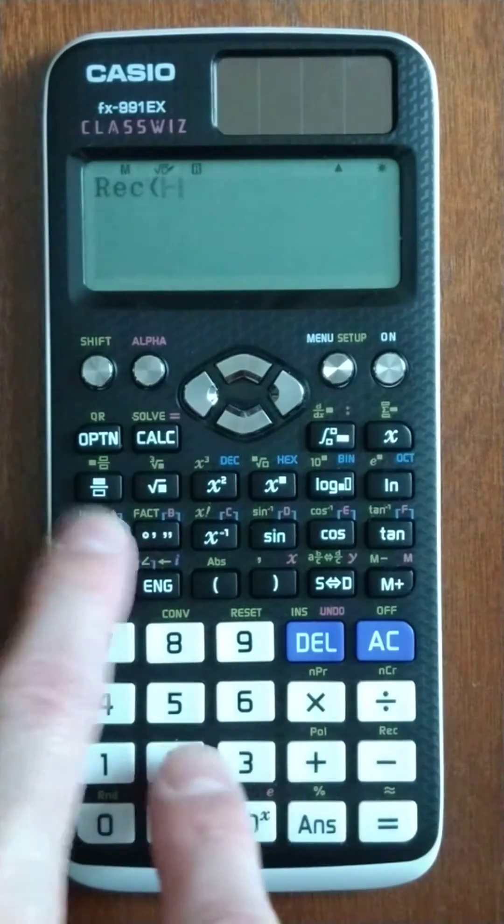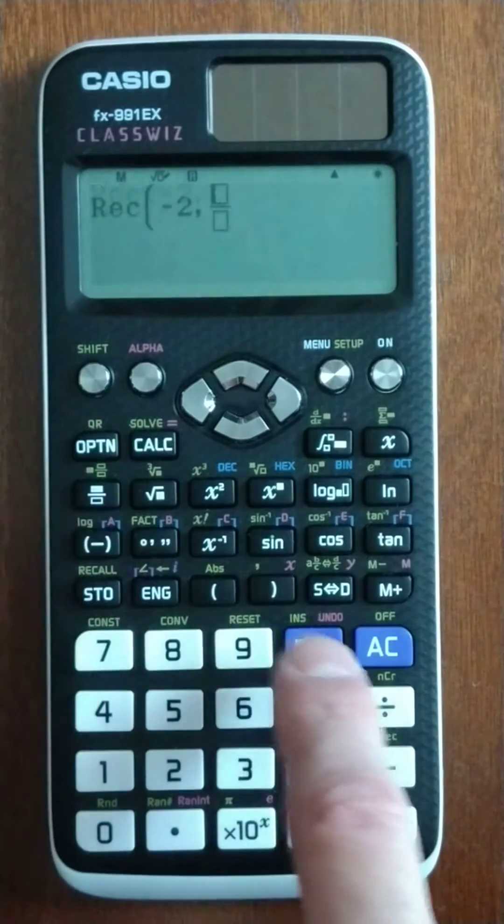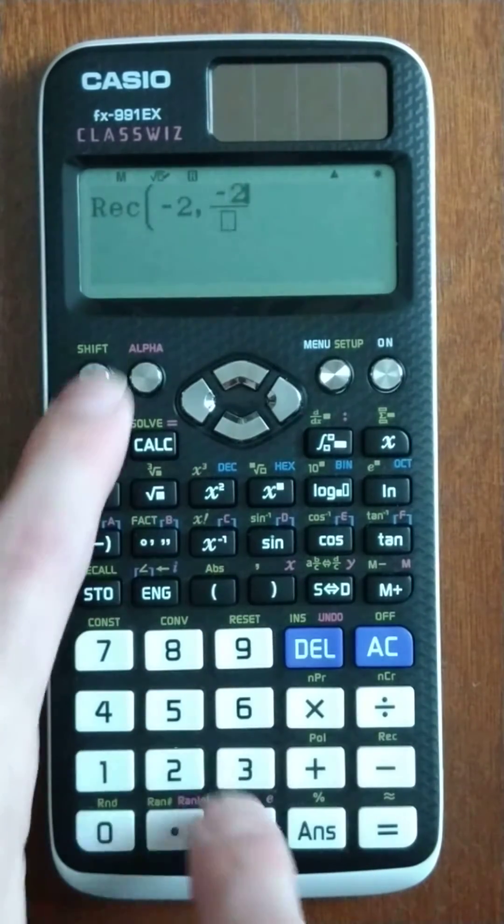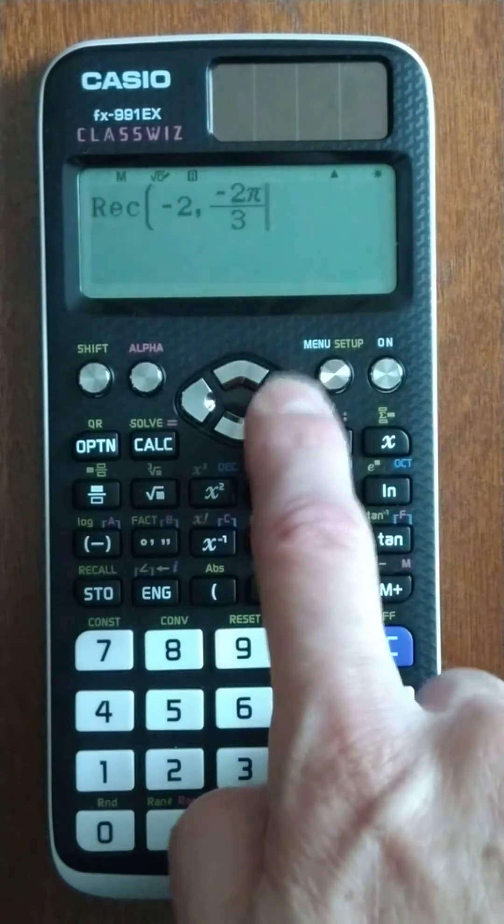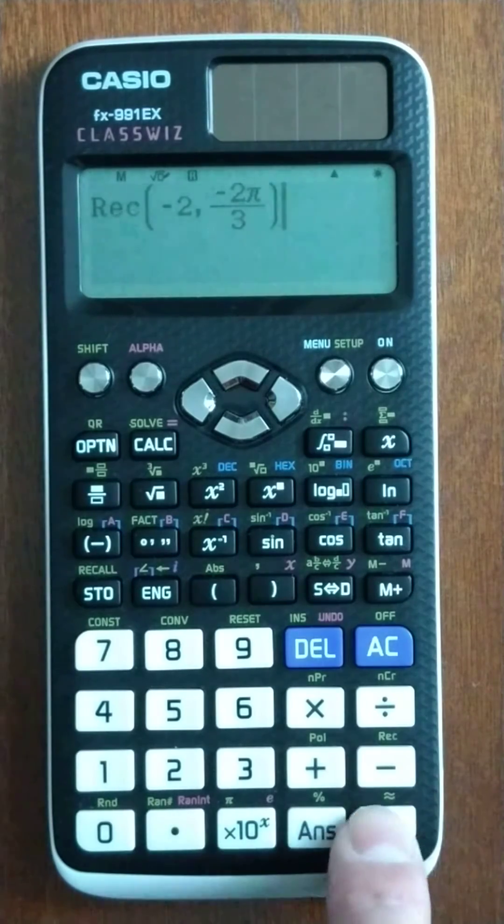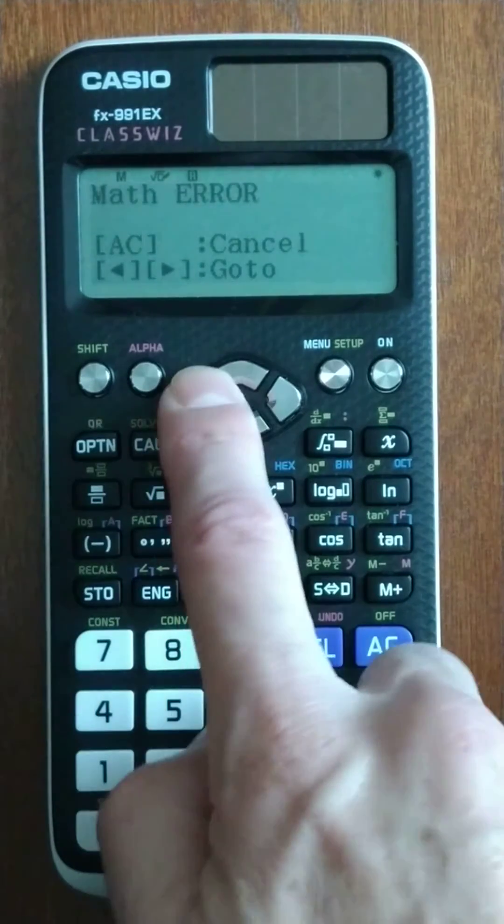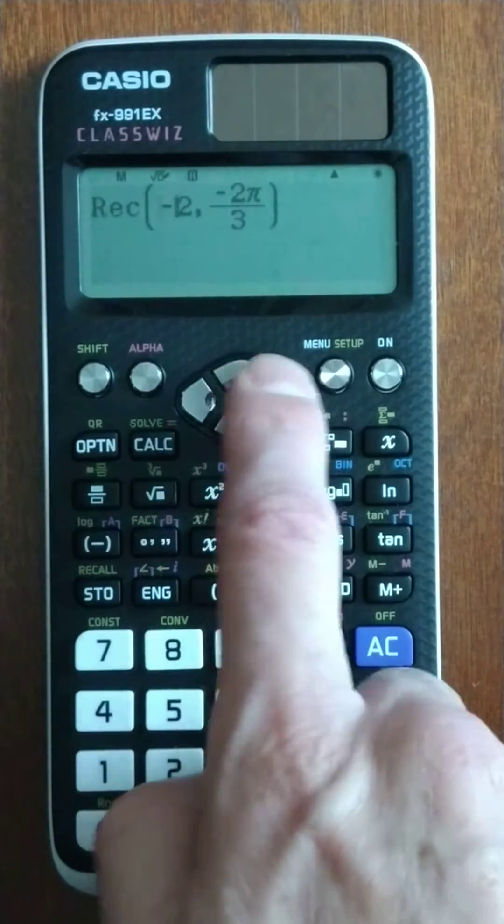We type it in, negative 2, comma is shifted. And then we have negative 2 pi over 3. Calculators in radians, I don't remember if I said that. All these calculators will be in radians. Error! It turns out it hates this, it won't do it if you have a negative value here. I'm not exactly sure why.